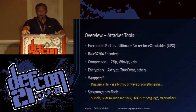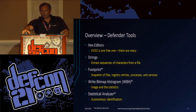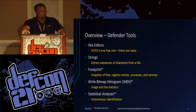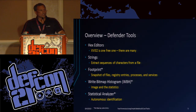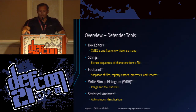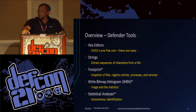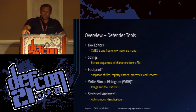Attackers have lots of tools, right? Packers, base encoders, encryptors, compressors, wrappers — I wrote that one, just for fun — and various stego tools. There are a lot of stego tools out there. Defenders have hex editors and strings. Footprint is one of my tools that helps identify what malware did to your system. It takes a snapshot of files, registry keys, processes and services, and then you can take a later snapshot and compare them. There's also a right bitmap histogram, which I can't think of a better title for, that takes an image of a file and takes some basic statistics. You can learn a lot from just a few basic statistics. And then the statistical analyzer combines the two and automates them. My contact information is at the end of the presentation.